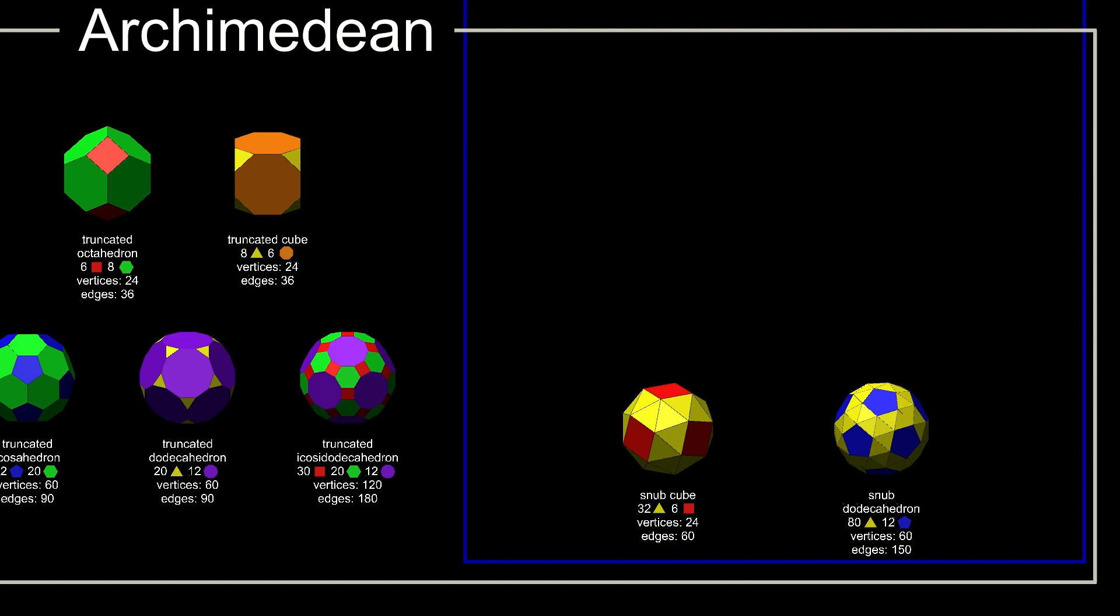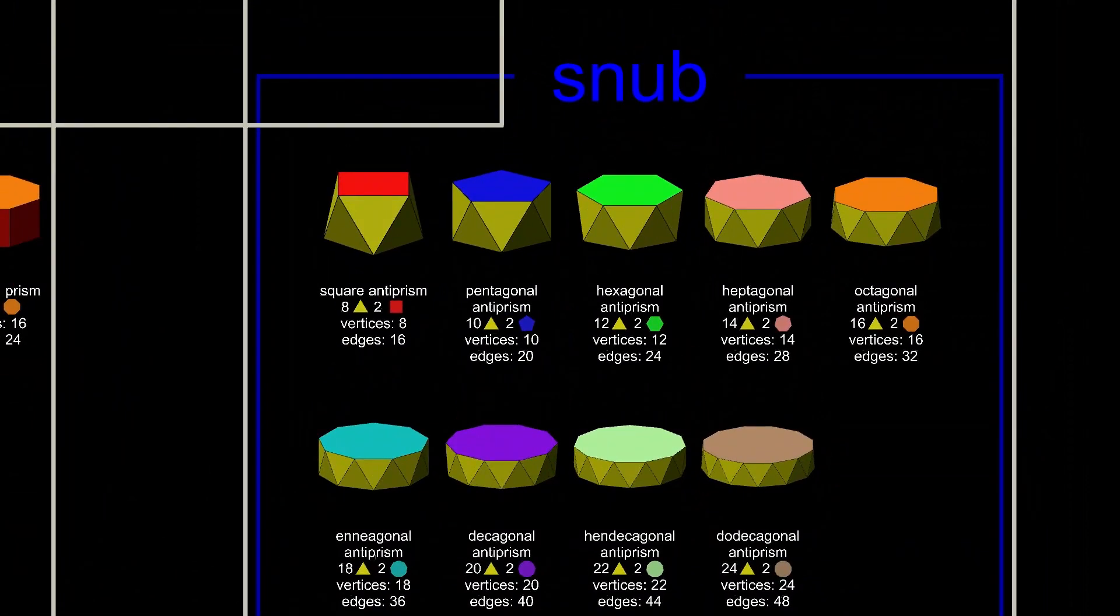But the anti-prisms can also be regarded as snubs, so I've put them in the same box. I haven't included the octahedron in the snub section, though you could argue that technically it should be.